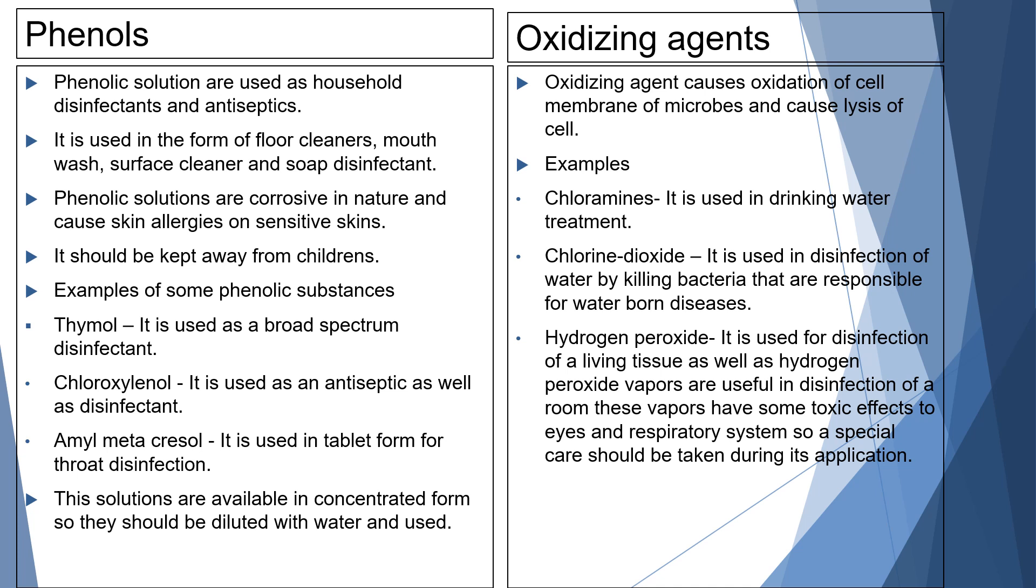Hydrogen peroxide is used for disinfection of living tissue as well as its vapors are used for disinfection of a room. The important thing is it consists of some toxic effects on our eyes and respiratory system. So it should be handled with care.